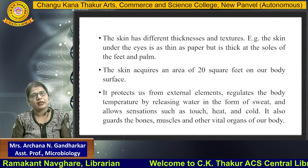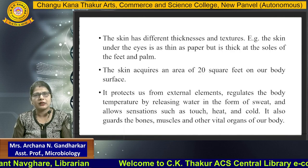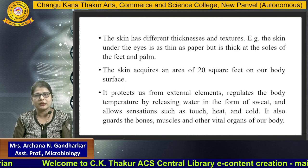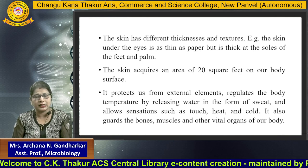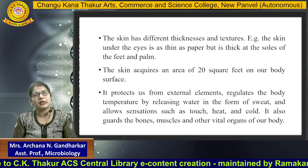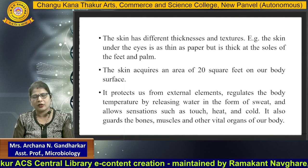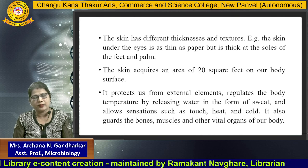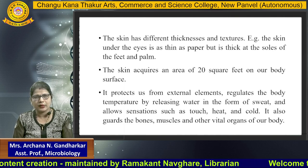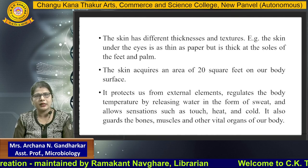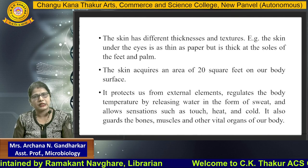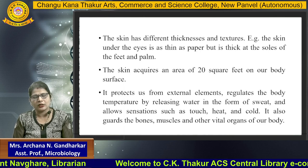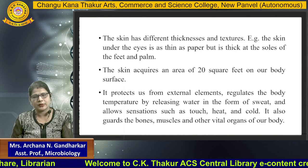The skin has different textures. For example, the skin which is under the eye is as thin as paper, but the skin near the sole of the feet and the palm is somewhat thicker in nature. The skin acquires an area of 20 square feet on our body surface. It protects us from the external environment, regulates body temperature by releasing water from sweat, and allows sensations like touch, heat and cold. It also guards the bones, muscles and other vital organs present in our body.